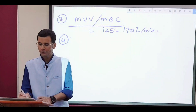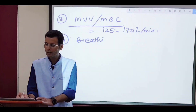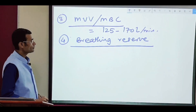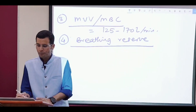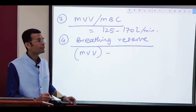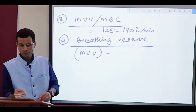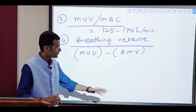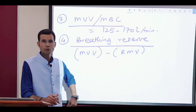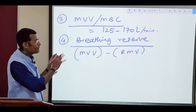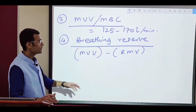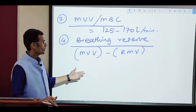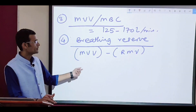That brings us to the next definition: breathing reserve. The maximum voluntary ventilation is the most air we can ventilate every minute, while respiratory minute volume is the air ventilated at rest per minute. The difference between the two is our reserve — this much is used at rest, and this much can be achieved maximally. That difference is called breathing reserve.